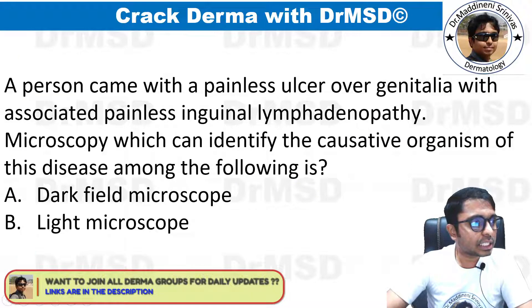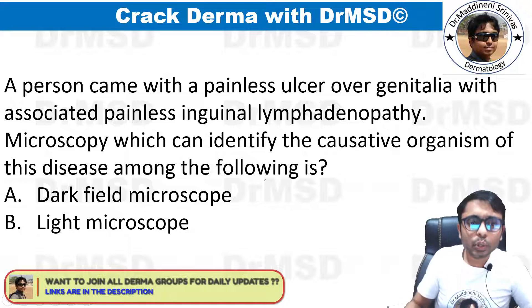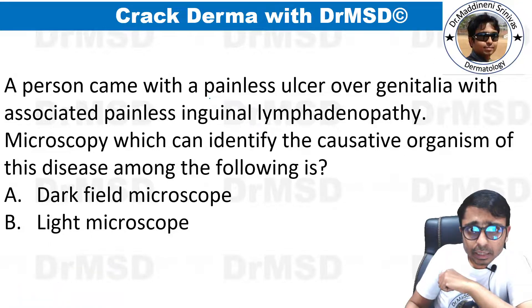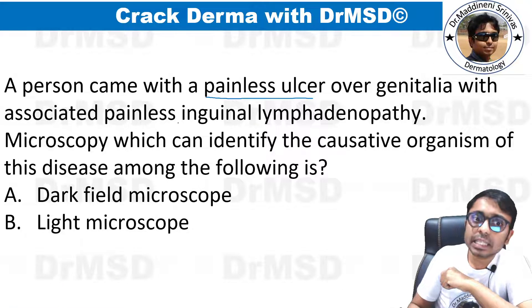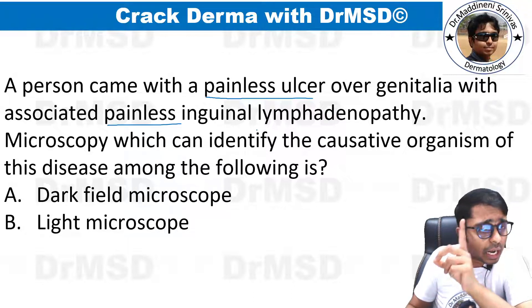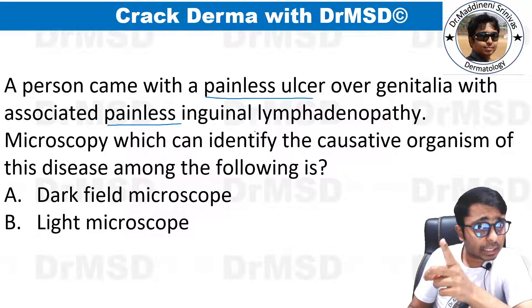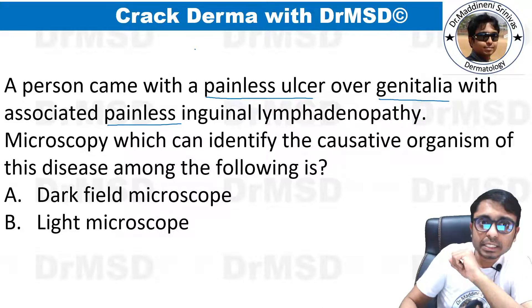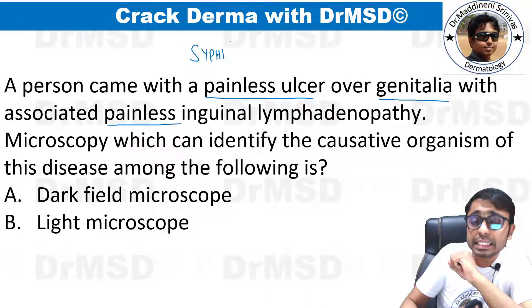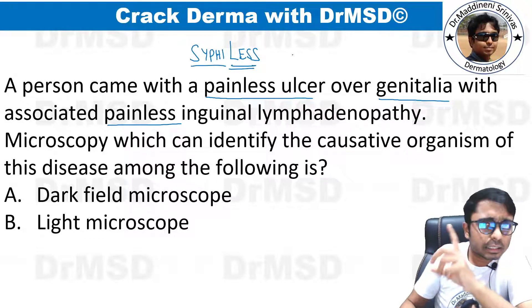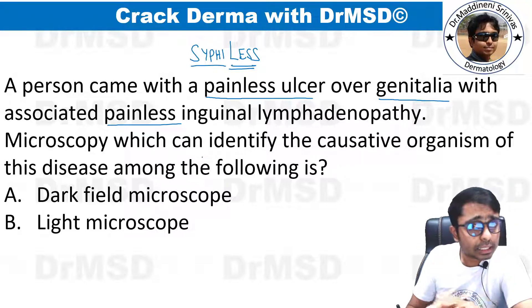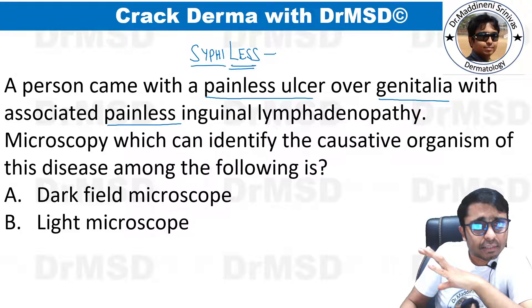Looking at questions from sexually transmitted infections: a person came with a painless ulcer over the genitalia with associated painless inguinal lymphadenopathy. Whenever both the ulcer and lymphadenopathy are painless, the diagnosis to think about is syphilis. The causative organism is Treponema pallidum.